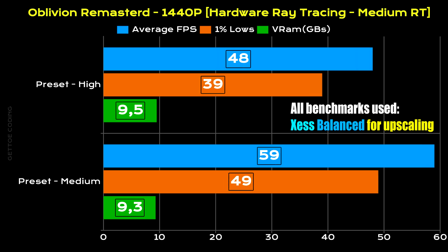Now looking at the 1440p results for the same graphical presets but with the ray tracing preset set to medium: for the high graphical preset, an average FPS of 48 was maintained, with 1% lows at 39 and VRAM usage at 9.5 gigs. For the medium graphical preset, average FPS came in at 59, with 1% lows at 49 and VRAM at 9.3. We're still seeing a big difference between graphical presets, but not much difference between the medium and high ray tracing presets.